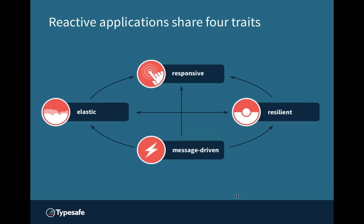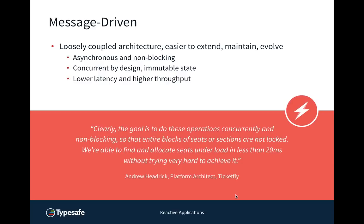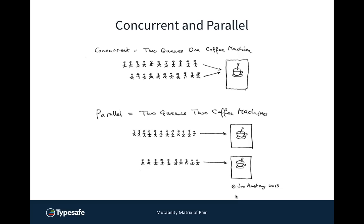Looking at the reactive application traits — for me it all begins at the bottom with message-driven. Earlier versions of the reactive manifesto talked about being event-driven, but the community felt event-driven conveyed locality, implying it ran on one machine, whereas message-driven implies a message could be consumed by any thread, any machine, any data center if that latency is acceptable. That drives elasticity — scaling up and down by need — as well as resilience, because if anything goes wrong handling a message you can always reconsume it. That all leads to a responsive experience for users.